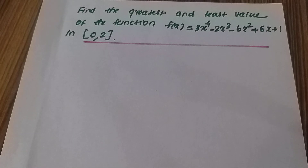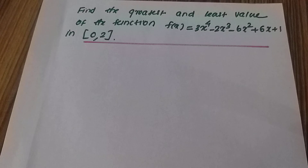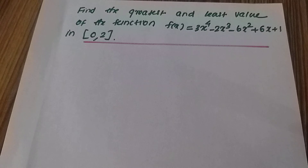Hey students, here we have a question. Find the greatest and least value of the function f(x) = 3x⁴ − 2x³ − 6x² + 6x + 1 on the interval [0, 1].